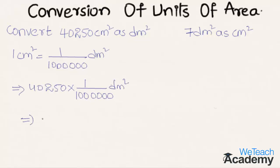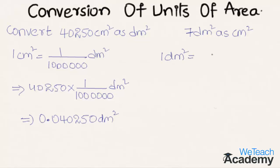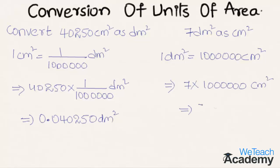By cancelling the six zeros in the denominator and writing a decimal point, leaving six digits from right to left in the numerator, we get the result as 0.040250 decameter square. For the next example, we convert seven decameter square into centimeter square. We already know that one decameter square is equal to one million centimeter square. So we multiply seven by one million centimeter square, and we get the result as seven million centimeter square.